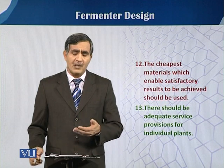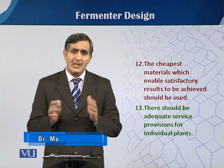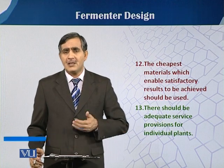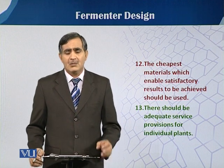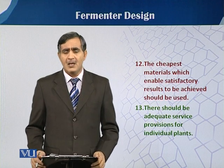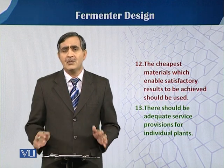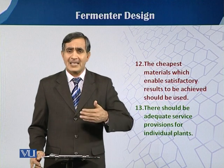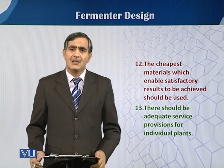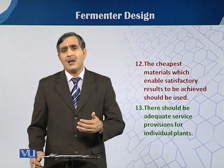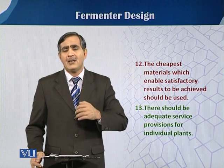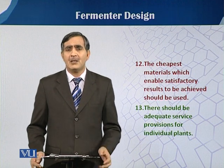The twelfth requirement is that the cheapest suitable material should be used while fabricating the fermentation vessel, because the material choice is very critical. Sometimes there are glass vessels and sometimes stainless steel vessels. Glass vessels are preferred because they have very smooth internal surfaces, but there is a limitation — they can only be used up to a certain volume and only for ex-situ sterilization, not for in-situ sterilization. When there is acid fermentation where pH must be maintained at a very acidic condition, the material should be non-corrosive to acids. The cheapest material that enables satisfactory results should be used.